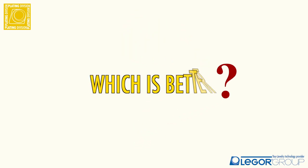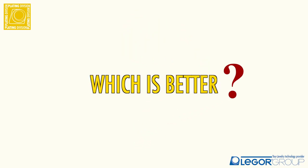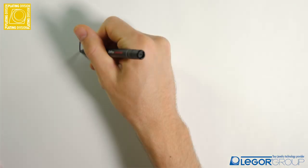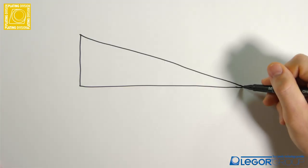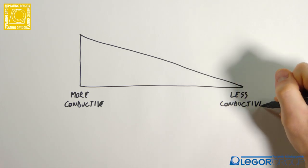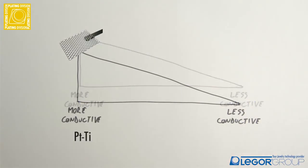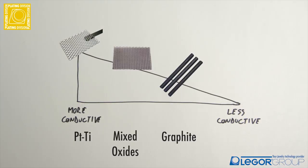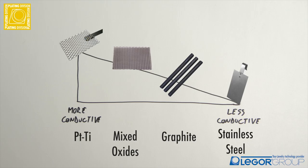As you can imagine, there is a difference between these materials. In fact, not every anode has the same conductive capacity. The range is set as follows from the most conductive to the least conductive: platinized titanium, mixed oxide, graphite, stainless steel. Each type of anode is used with a compatible electroplating solution.